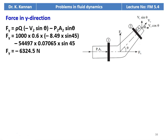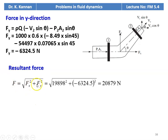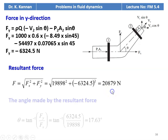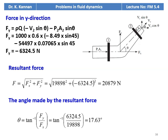Force in the y-direction: Fy = ρQ(−V2 sin θ) − P2A2 sin θ = 1000 × 0.6 × (−8.49 × sin 45) − 54,497 × 0.07065 × sin 45 = −6,324.5 Newtons. Resultant force F = √(Fx² + Fy²) = √(19,898² + 6,324.5²) = 20,879 Newtons. Angle θ = tan⁻¹(Fy / Fx) = tan⁻¹(6,324.5 / 19,898) = 17.63 degrees.